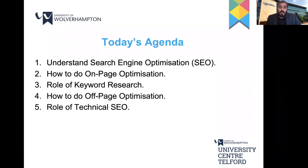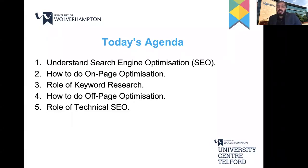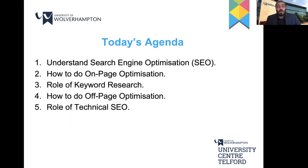The second component of SEO is off-page optimisation, which is basically associated with link building — I'll tell you about some techniques on how you can build your links. The final component is technical SEO, which is really important. On-page optimisation, keyword research, off-page optimisation, and technical SEO are basically four different jobs. Companies usually would hire four different people to perform these four different roles. So this is a hot skill these days. If you know how to do SEO, you'll have a lot of opportunities, and if you want to be your own boss, you can be a freelancer — there are a lot of opportunities on platforms like Fiverr or Upwork.